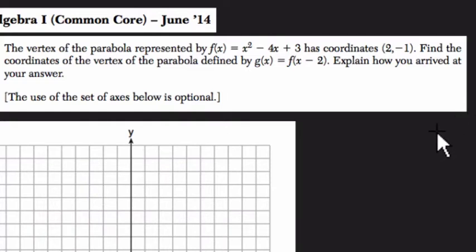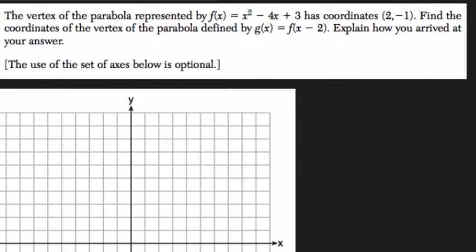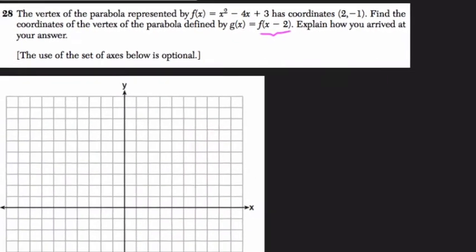Find the coordinates of the vertex of the parabola defined by g(x) = f(x - 2). Explain how you arrived at your answer. This is a function transformation problem and there are many ways to solve it. We'll look at three of them. The first is the one I recommend least, but it's good to have in the back of your mind. We're dealing with f(x - 2), and function translations will slide or translate your shape in four different ways: up, down, left, or right.